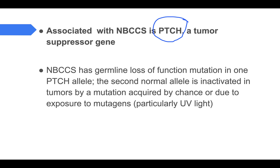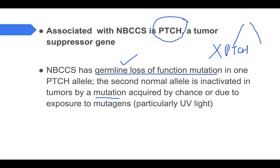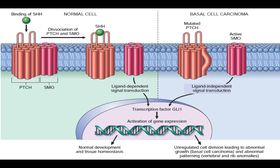In Gorlin syndrome, the key gene is PTCH. There are two alleles of this gene. One allele is lost during germline mutation — it is inactivated from birth (germline loss-of-function mutation). The second allele is lost upon exposure to mutagens like UV light. Only when the second allele is also lost does the tumor express itself — this is the two-hit mechanism.